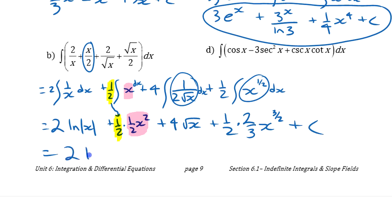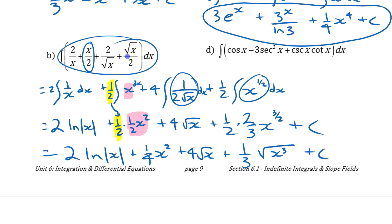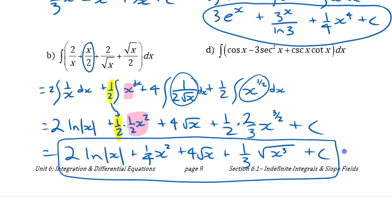2 ln absolute value of x, plus 1 quarter x squared, plus 4 root x, plus, this is 1 third when you multiply those two fractions. x to the 3 halves, I can say it's square root of x to the third if I want. Just to put it back into the form like what it was there. All right, so that one seemed like lots to get to the answer there. That's what it is.